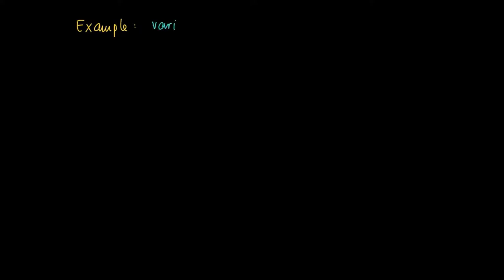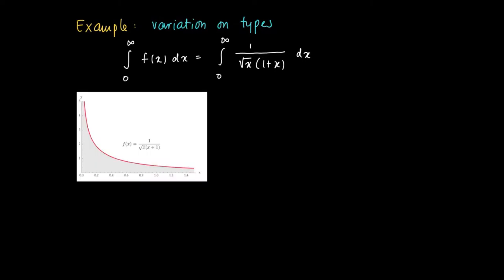We discussed some types of improper integrals, but there are other types as well. We can vary and combine types. Consider the integral from 0 to infinity of f(x) dx, where f(x) is 1 over the square root of x times (1 plus x). This function has an asymptote on the left-hand side,